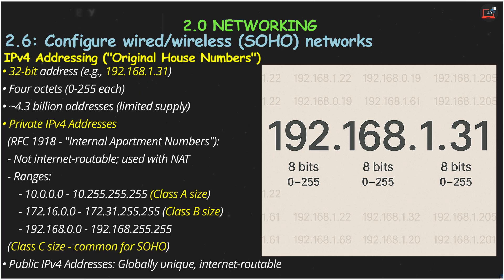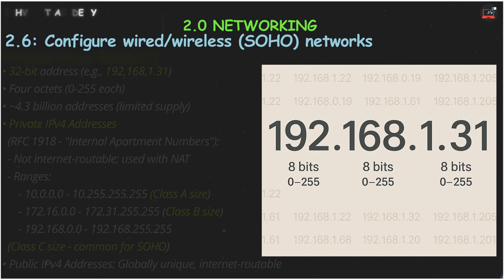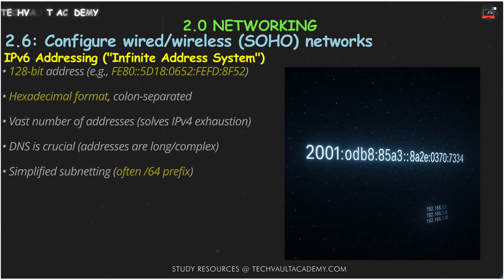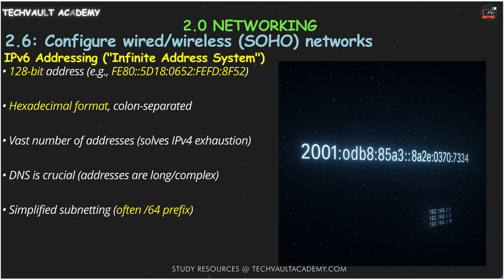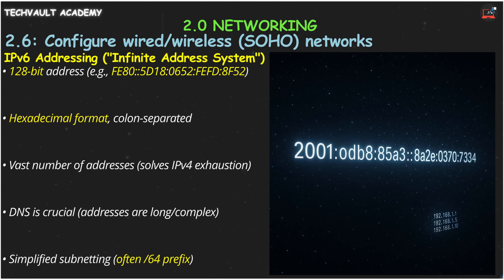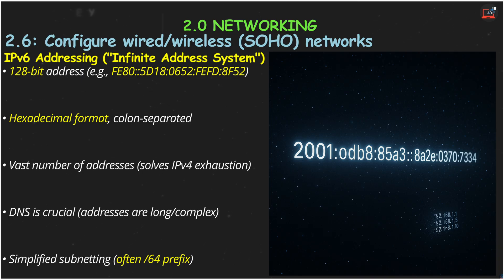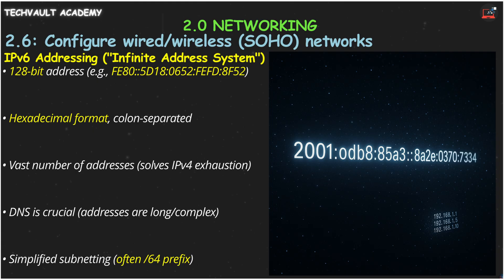To solve the IPv4 address shortage, we have IPv6. IPv6 addresses are 128 bits long, providing a virtually inexhaustible supply — think 340 undecillion addresses. They look different, written in hexadecimal with colons, like FE80:5D18:0652:FEFD:8F52. Because they're so long, we rely heavily on DNS to use names instead. Subnetting is also simpler, often with a slash-64 prefix for the network and the remaining 64 bits for the host.